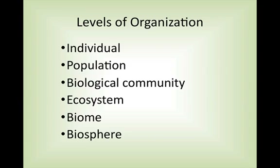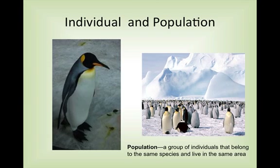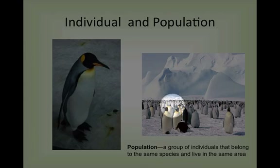There's individual, population, biological community, ecosystem, biome, and biosphere. If we take a look at individual and population: individual is quite simple — here I have a picture of a penguin. It is a single, individual organism. This one penguin is an individual. But when you look at a group of individuals, like this group of penguins down here, that's a population.